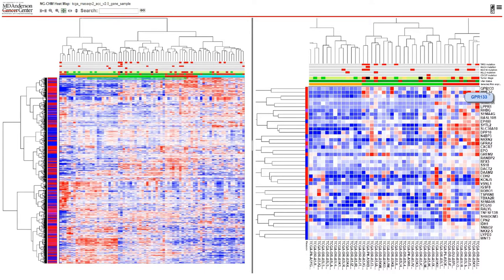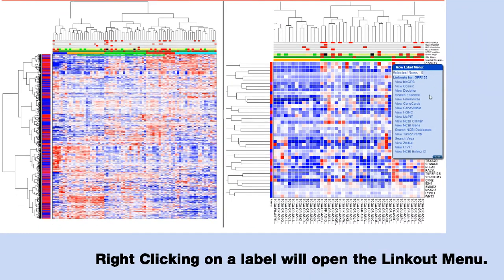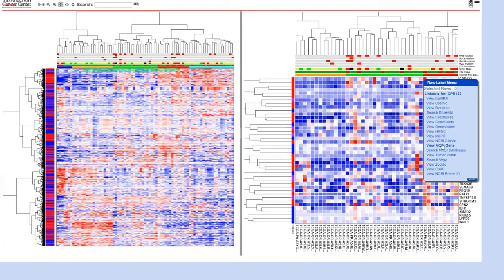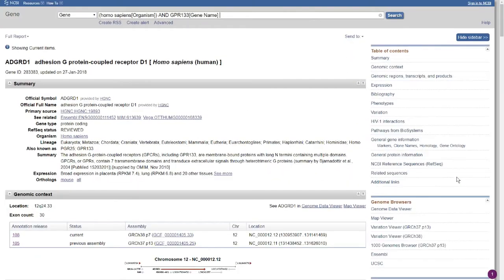For example, you may be looking at a heat map containing gene expression data and would like a summary and/or detailed information about one or more genes. Right clicking on the gene label will display a menu of available link outs for that gene. Selecting a menu entry will perform the corresponding link out action. In most cases, this involves opening a new window or tab containing the requested information. For instance, selecting 'View NCBI Gene' will open a new window or tab containing that selected gene's information.